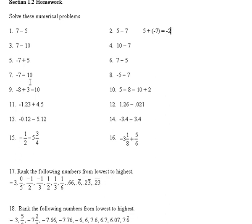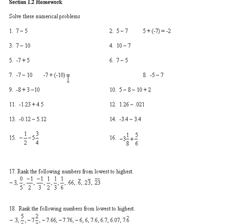Negative 7 minus 10 can be looked at as negative 7 plus a negative 10. If the signs are the same — which they are when we write it this way, both are negative — so we add them and bring along the sign. The answer would be negative 17. We can think of this as being negative 7 degrees and it dropped down 10 more degrees, so the temperature is negative 17.